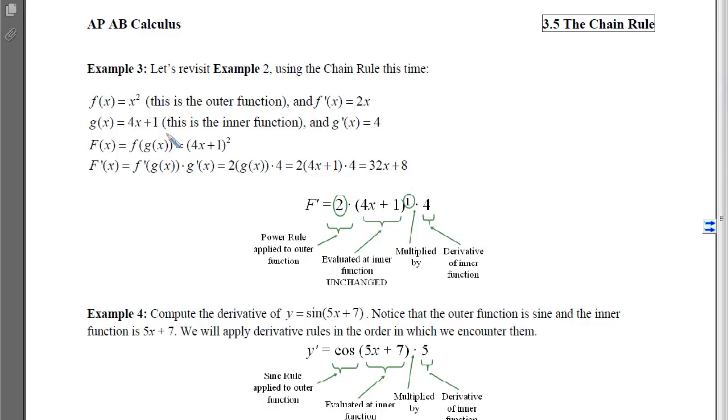With example 3, I'd like to revisit that example 2 using the formalized chain rule. So here our outer function is f(x) = x², our inner function is 4x + 1, and then capital F is those two functions composed. So we took the 4x + 1 and we plugged it into f to get a (4x + 1)².